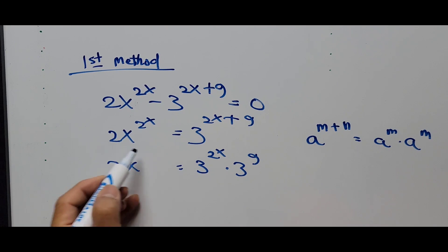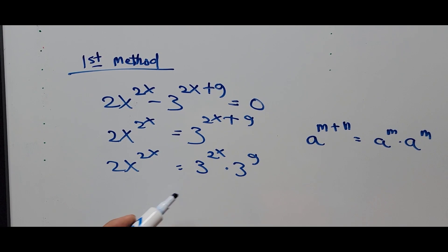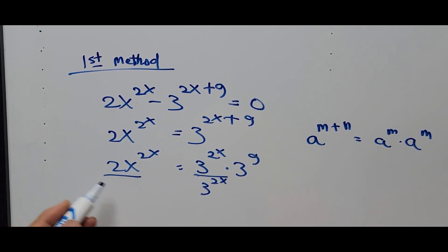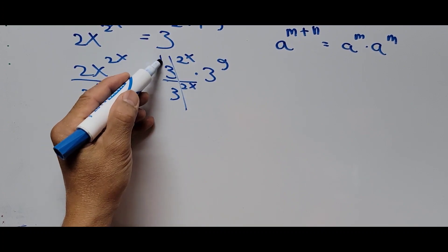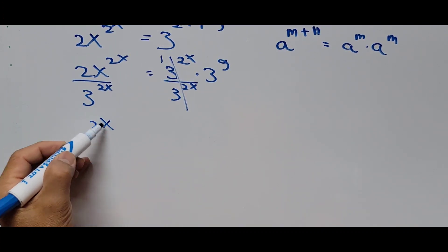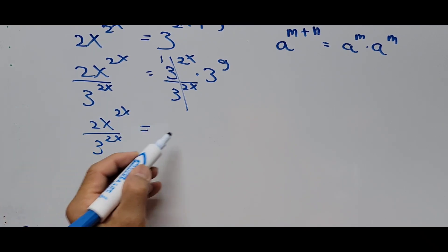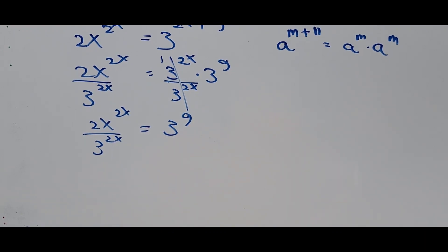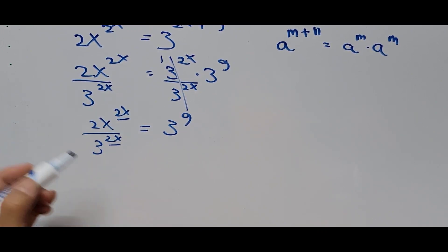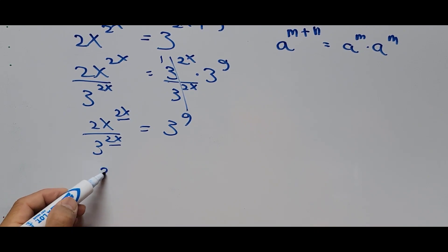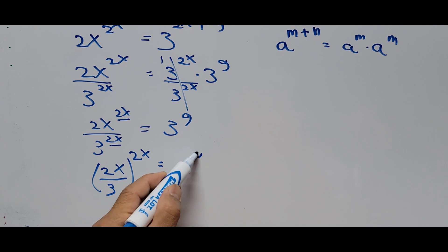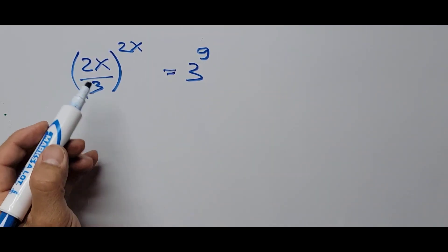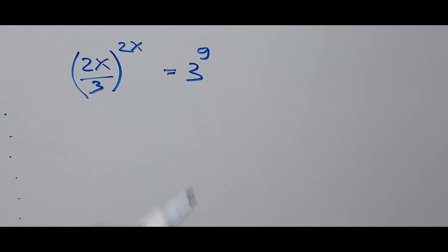That is 2x raised to the 2x equals 3 raised to 2x times 3 raised to 9. From here, divide the whole equation by 3 raised to the 2x. The right side 3 raised to 2x divided by 3 raised to 2x becomes 1, and the left side gives us 2x raised to the 2x divided by 3 raised to the 2x equals 3 raised to the power of 9. Notice the base is 2x divided by 3 and the exponent is 2x.